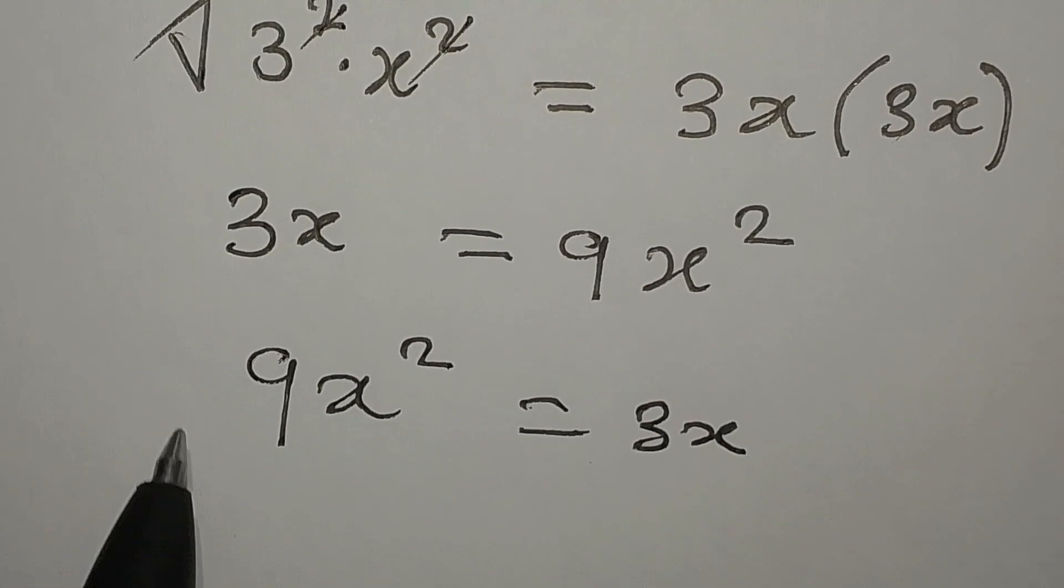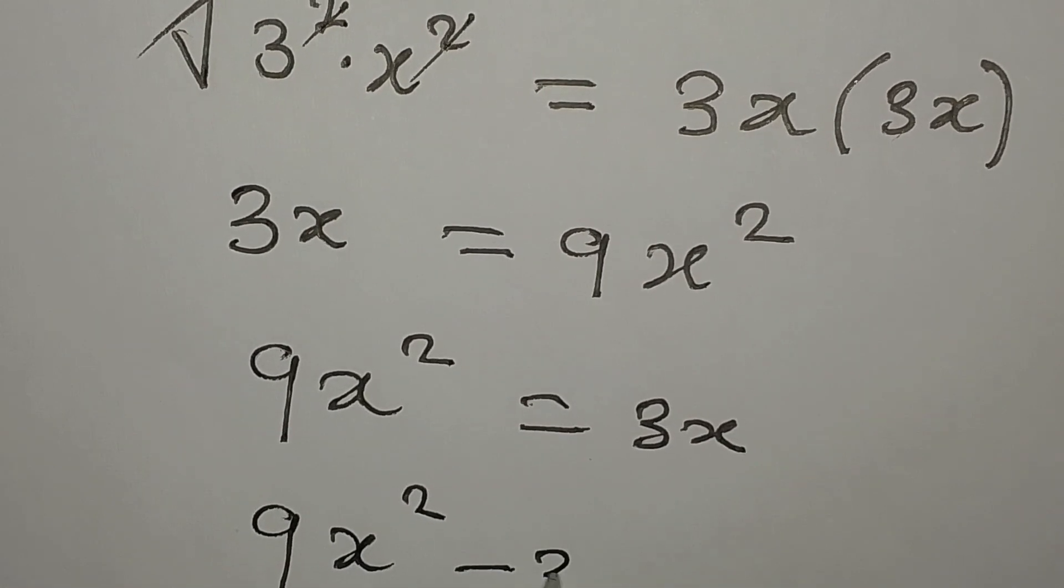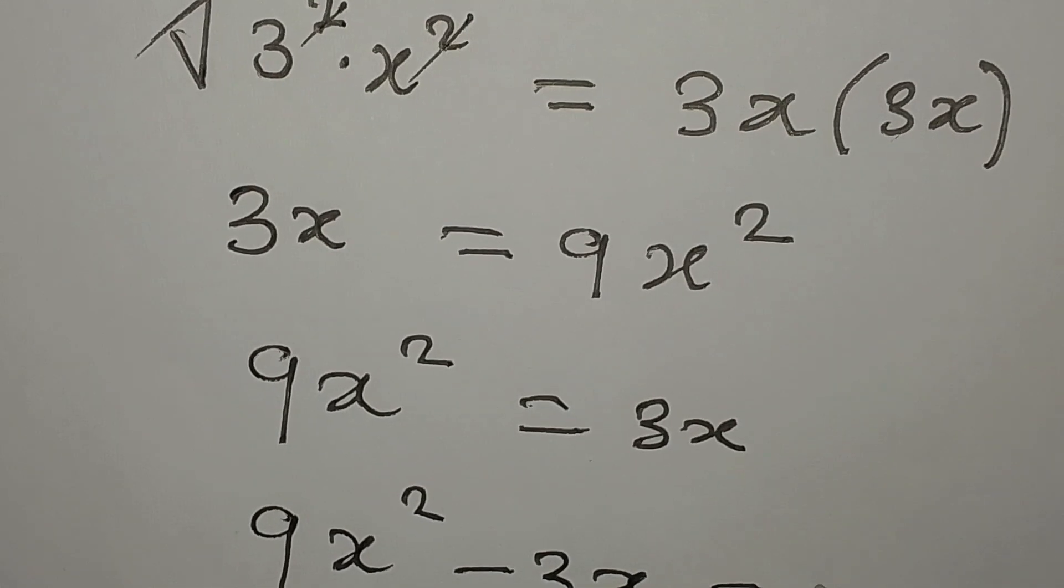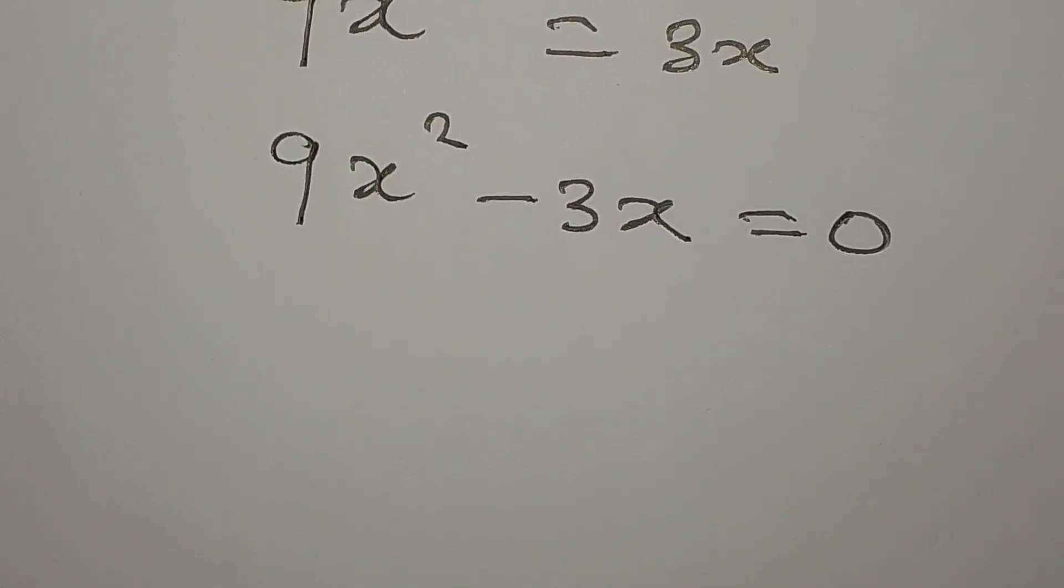Now take 3x to the left, so we have 9x squared minus 3x being equal to 0.